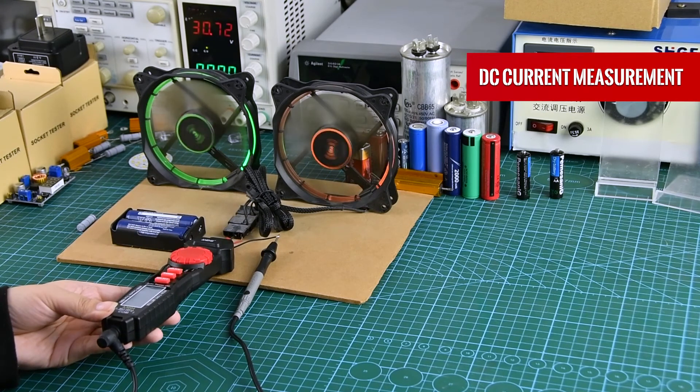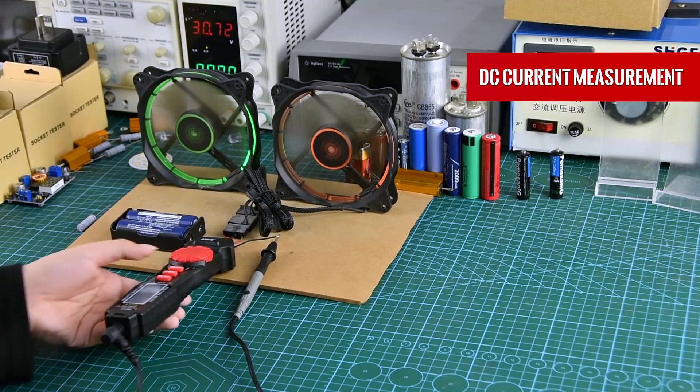DC Current measurement: the current at work can be measured by placing the measuring pen in the corresponding position.